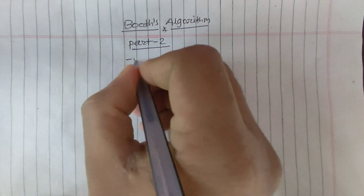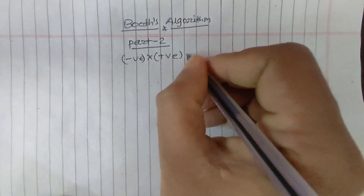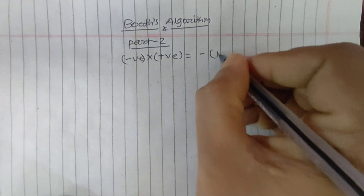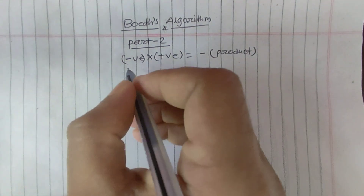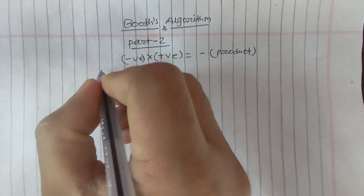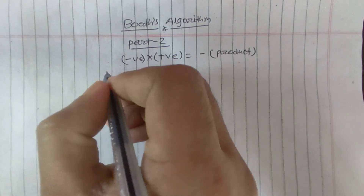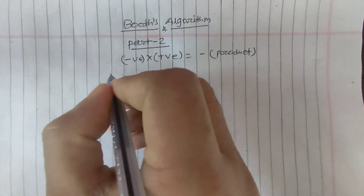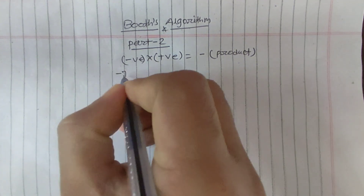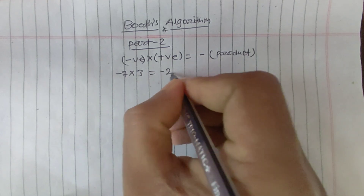If one number is negative and another number is positive, then the result will always be negative. Let's take one example to see whether the result will be positive or negative. We have the example of minus 7 multiplied by 3, so the result will obviously be minus 21.